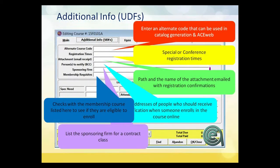Additional information — UDS — this is the second screen, with a lot of different options for special use purposes. Alternate course code allows you to reference an alternate ID. One upcoming use for this is cross-linking your Student Manager courses in Aceware to a campus database. In Montana and Virginia, we're integrating with PeopleSoft and Banner, and this field lets you tie the Banner ID of the class to the class in Aceware.